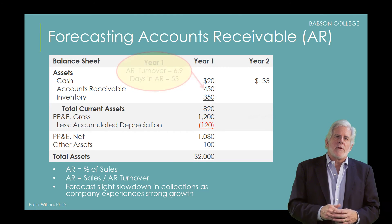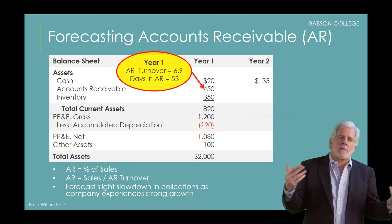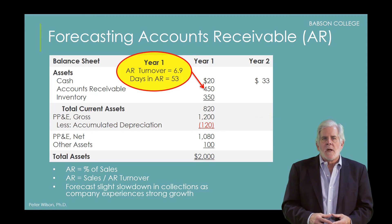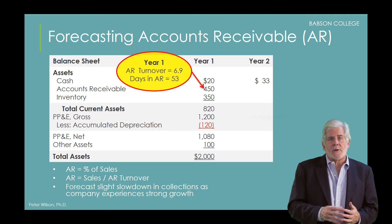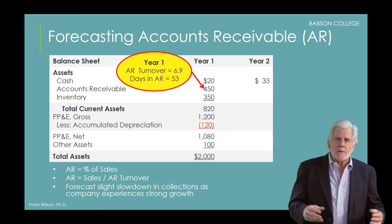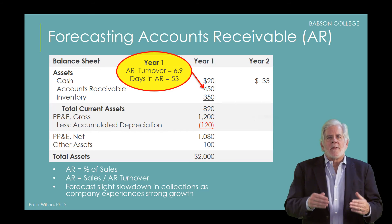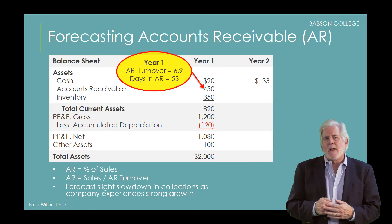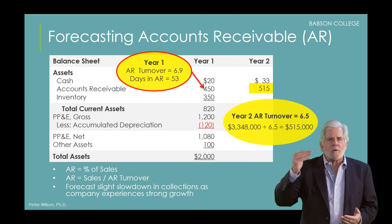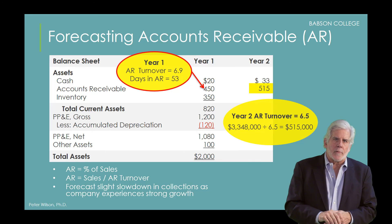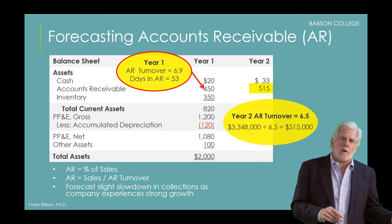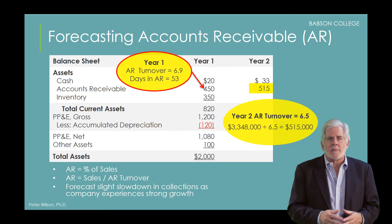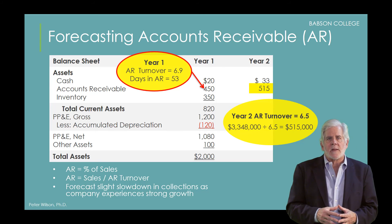At Nebco, we see that during their first year they had a receivables turnover of 6.9 times a year, or every 53 days. While they would like to increase the receivables turnover — which is the same as reducing the days in receivable — this can be unrealistic for a startup company that's trying to grow sales and market share. So let's assume for Nebco that there'll be a slight drop in the receivables turnover ratio in year two, from 6.9 to 6.5. This will lead to an increase in accounts receivable from $450,000 to $515,000.